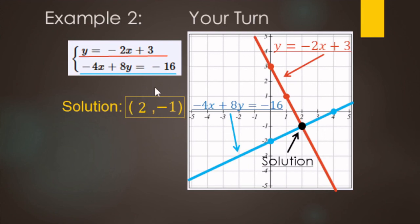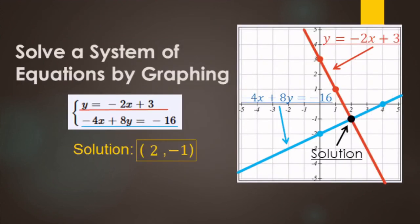The ordered pair that makes both equations true is two comma negative one. Remember: when graphing linear systems, graph both lines, and the solution is where the two lines meet, cross, or intersect — that ordered pair makes both equations true.